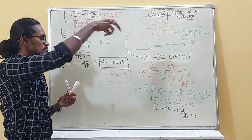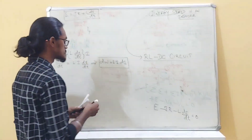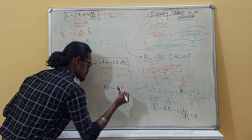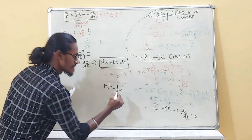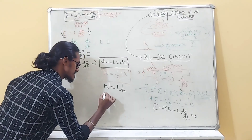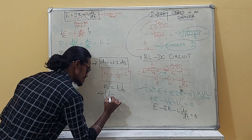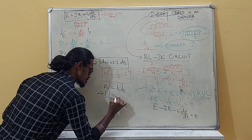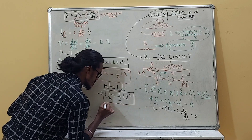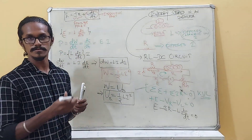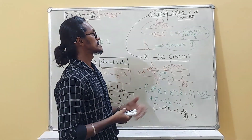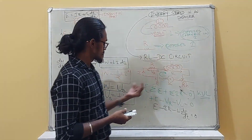This much work is done to store energy in the inductor. Since work done equals energy stored, and the energy is magnetic in nature, the magnetic energy stored is U_B = ½LI².